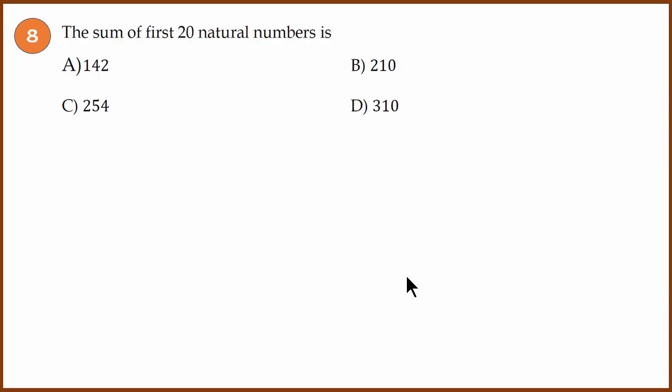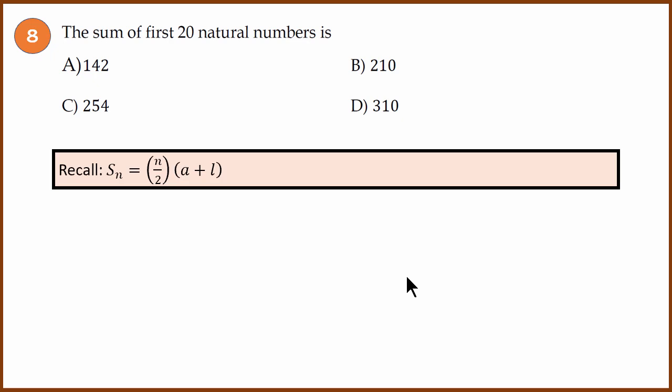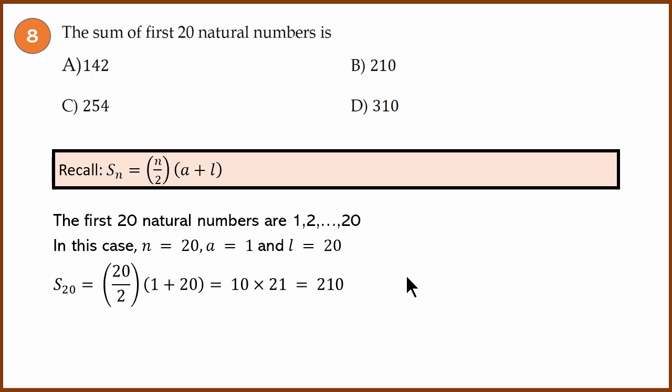Question 8: The sum of first 20 natural numbers. The formula is S_n = (n/2)(a + l). The first 20 natural numbers are 1, 2, 3, 4, 5, 6, 7, 8 till 20. So in this case n = 20, a = 1, a is the first term which is 1, and l = last term, which is 20. If you substitute in the equation, you get n/2 is 20/2 which is 10. a + l is 1 + 20 which is 21. 10 times 21 is 210. So the answer is 210.